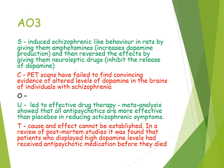Looking at AO3, we have supporting evidence: research induced schizophrenic-like behaviour in rats by giving them amphetamines, which increased dopamine production. When the amphetamines were removed and neuroleptic drugs were given — which inhibited the release of dopamine and lowered dopamine levels — the schizophrenic behaviour disappeared. This implies that high levels of dopamine are linked to schizophrenic symptoms.